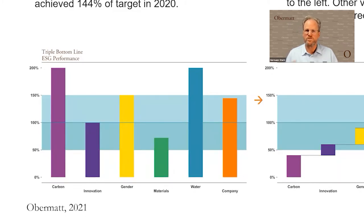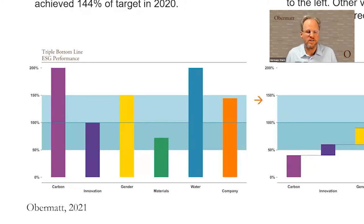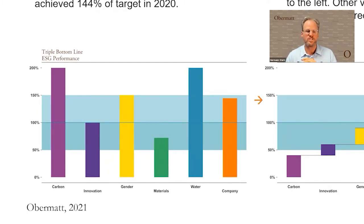Water was an outperformance — they wanted to use less water. Looking at all these bars, the average is the company's overall ESG performance. It can be calculated quite easily because these are all percentage values, and the result is simply a percentage value — just a simple average of the first five bars.